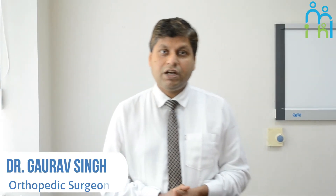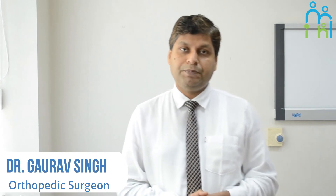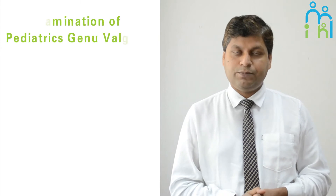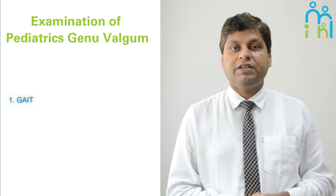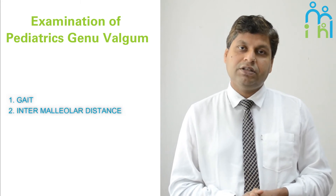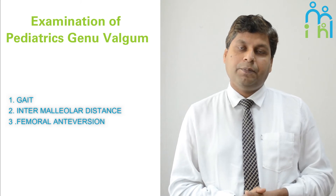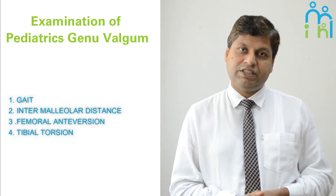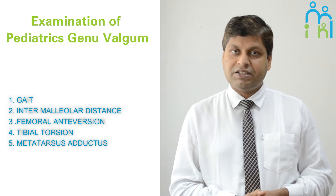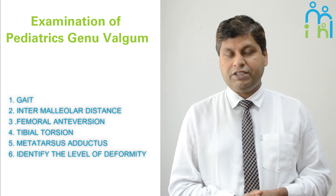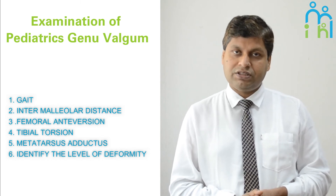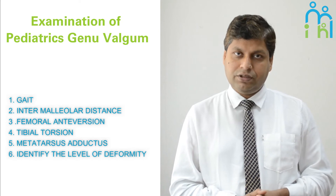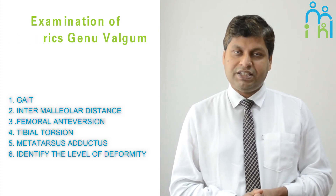Today I am going to tell you how to assess the patient of pediatric genu valgum. For the examination of pediatric genu valgum, we have to keep six points in our mind. Number one is the gait of the patient. Second is intermalleolar distance. Third is femoral anteversion. Fourth is tibial torsion. Fifth is metatarsus adductus. Sixth, most important, is whether we check deformities in femoral or tibia, which will help in surgical correction. We will take each one and examine how to assess these patients.